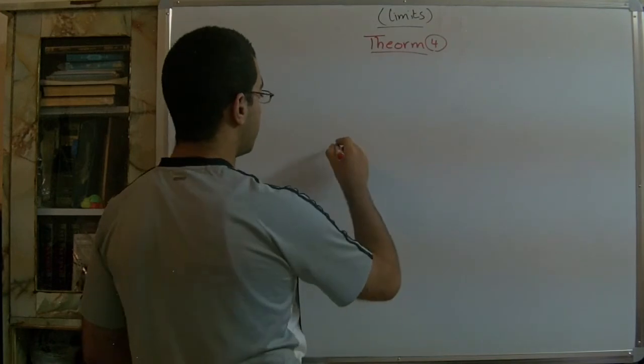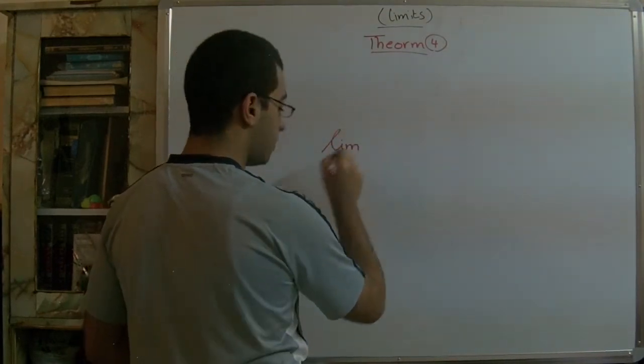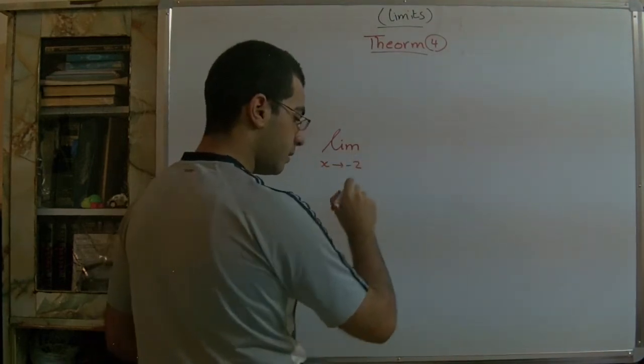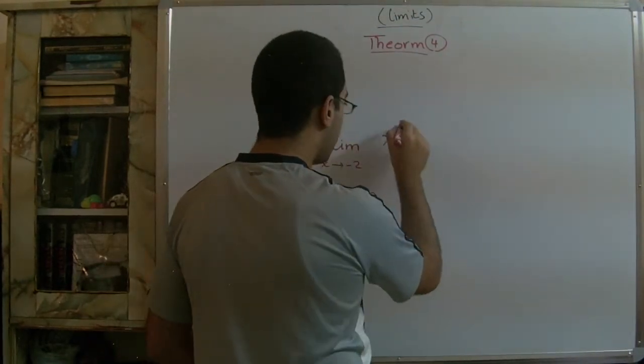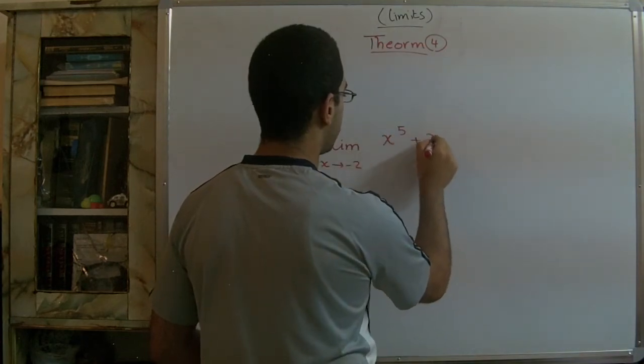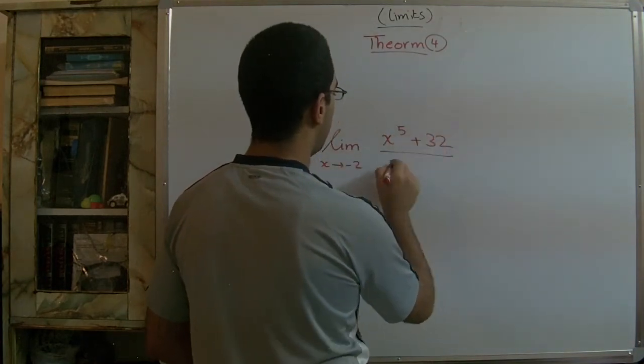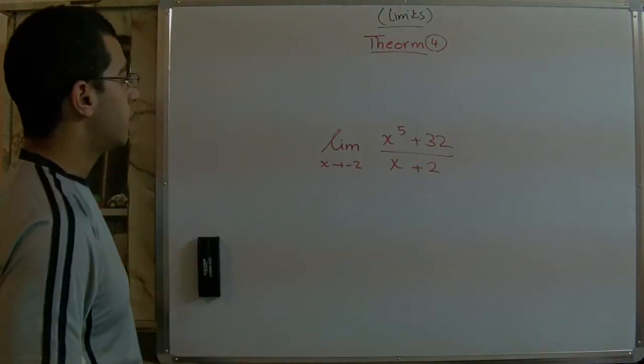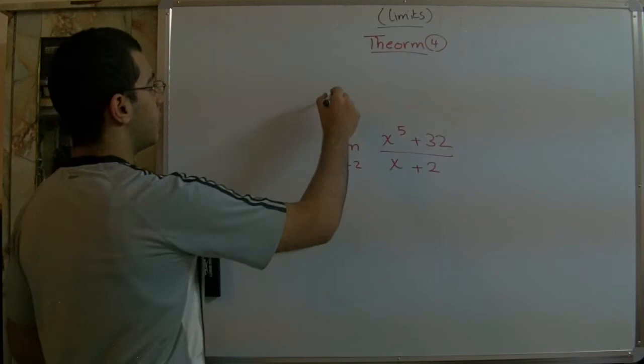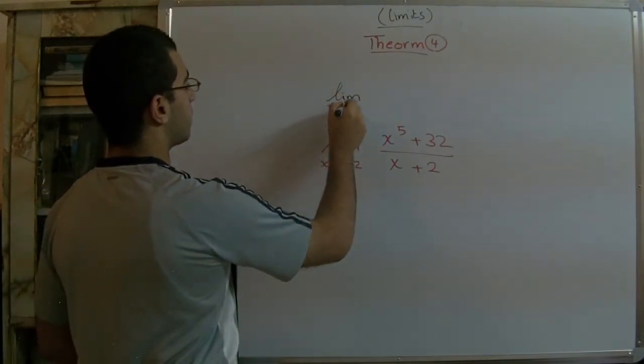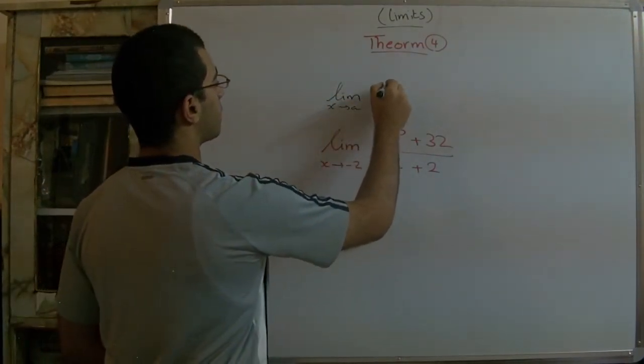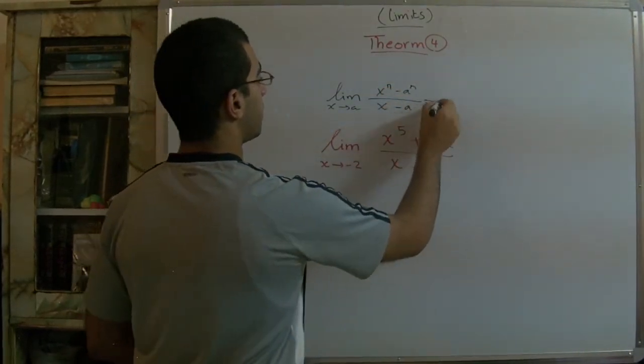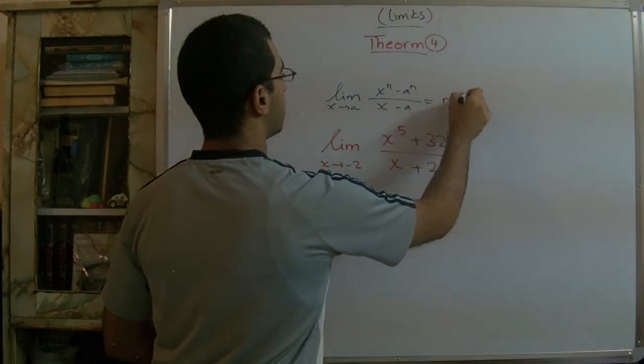We have limit of x approaches -2. And here we have x^5 + 32 over x + 2. Our formula says that if limit of x approaches a and here x^n - a^n over x - a, then the answer will be n·a^(n-1).